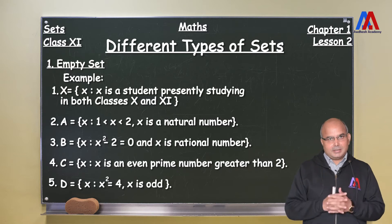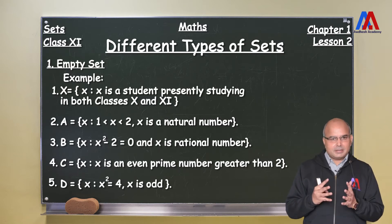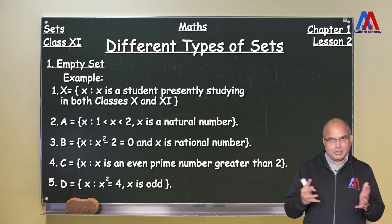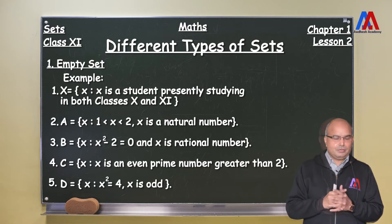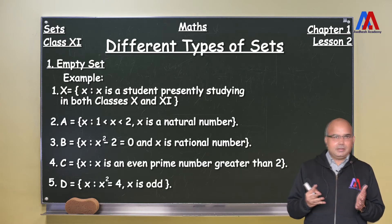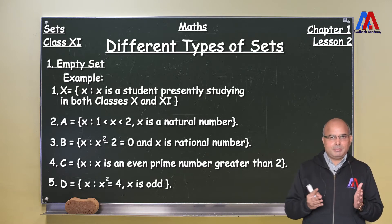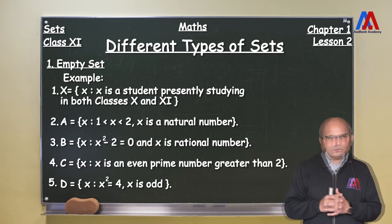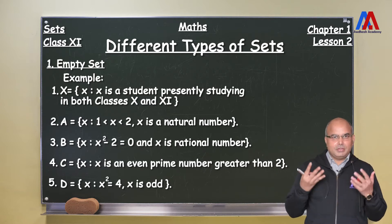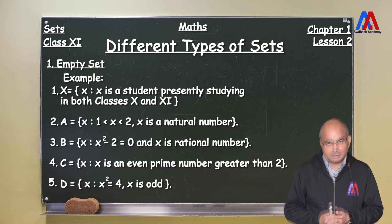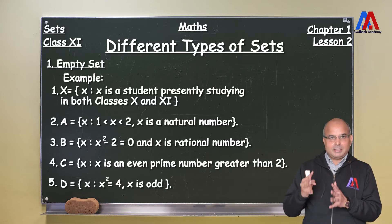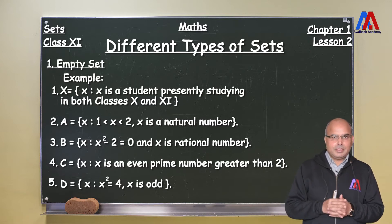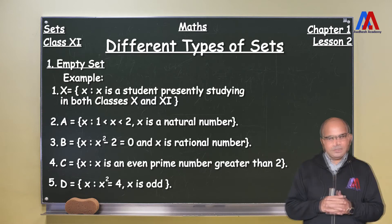Let's take the second example. If we say a set where x is a natural number which is greater than 1 and less than 2, we understand that natural numbers can be 1, 2, 3, 4, 5 and so on. So there is absolutely no possibility of having any number which is greater than 1 but less than 2, and so this is also an empty set.